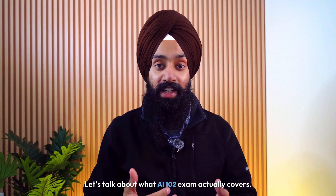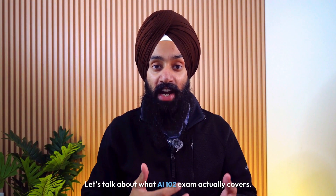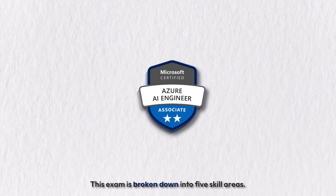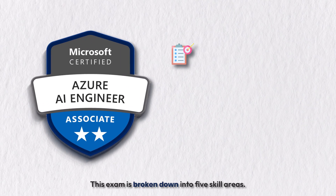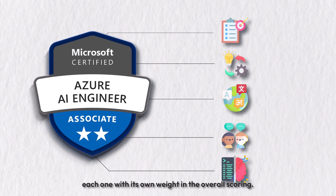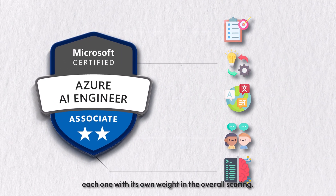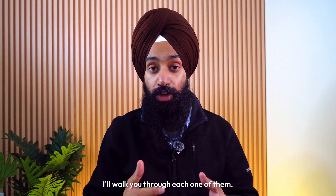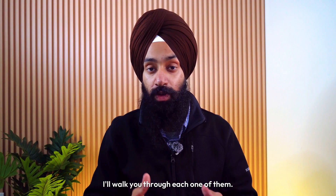Let's talk about what the AI-102 exam actually covers. This exam is broken down into five skill areas, each one with its own weight in the overall scoring. I'll walk you through each one of them.